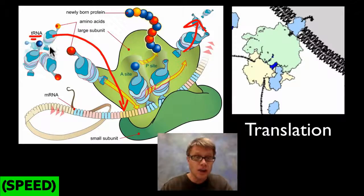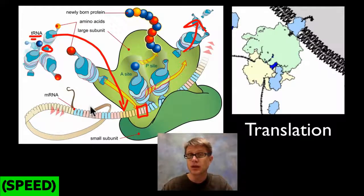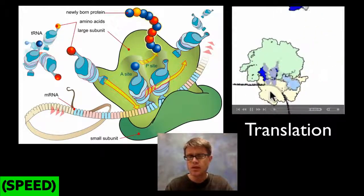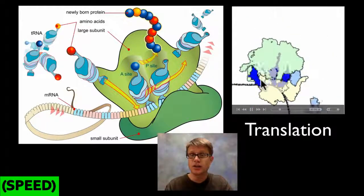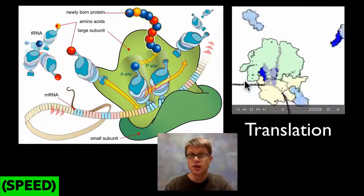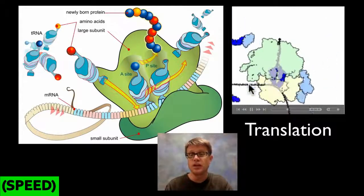Each tRNA grabs a specific amino acid and has three letters on the bottom called the anticodon, which bonds to the codon found in the messenger RNA. This occurs over and over again until it reaches a stop sequence, and then we're done with that protein. The small subunit is on the bottom and the large subunit is on top. The dark blue tRNAs each drop off an amino acid, then take off into the cytoplasm to pick up another. The messenger RNA from the nucleus feeds through the middle of the ribosome.